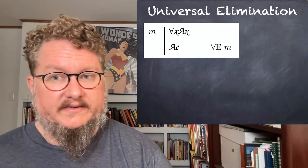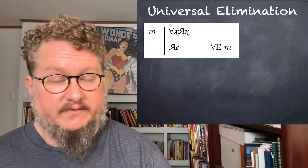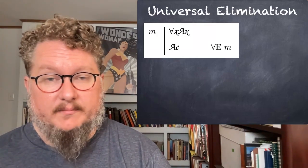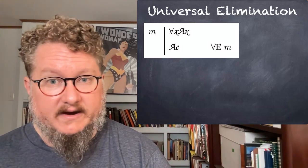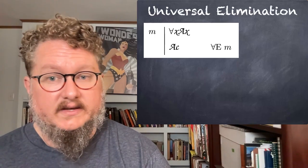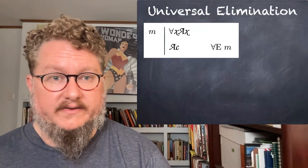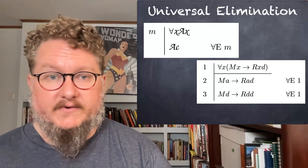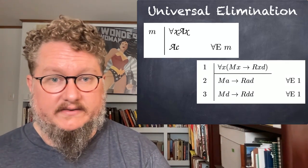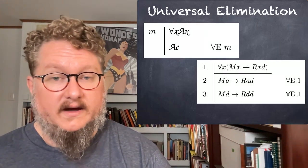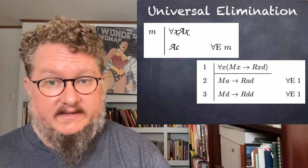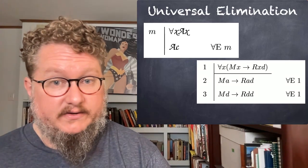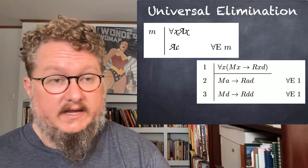Perhaps the simplest quantifier rule we have is the universal elimination rule. If you have a universal statement on line M, you can replace it with a statement with no universal quantifier and the variable replaced with a constant. So if the variable is X, we can replace it with a constant like C. Here you see it represented with the meta-variables script A, script X, script C. For example, if we have the statement for all X, MX, then RxD, we can apply the universal elimination rule and replace the X with whatever constant we like — it could be A as on line 2, or D as on line 3. Any constant will do.